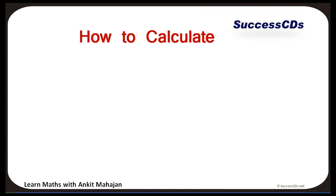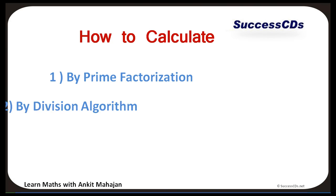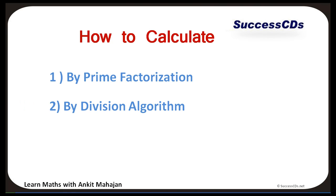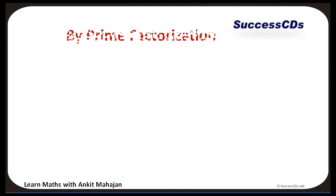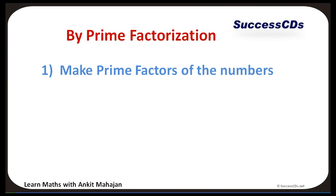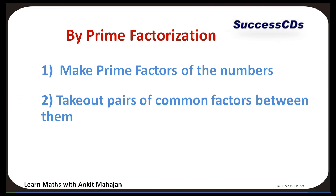There are various ways to calculate HCF. First is Prime Factorization and the other is the Division Algorithm. In the Prime Factorization method, we make prime factors of the numbers, take out the common factors, and multiply them to get our HCF.